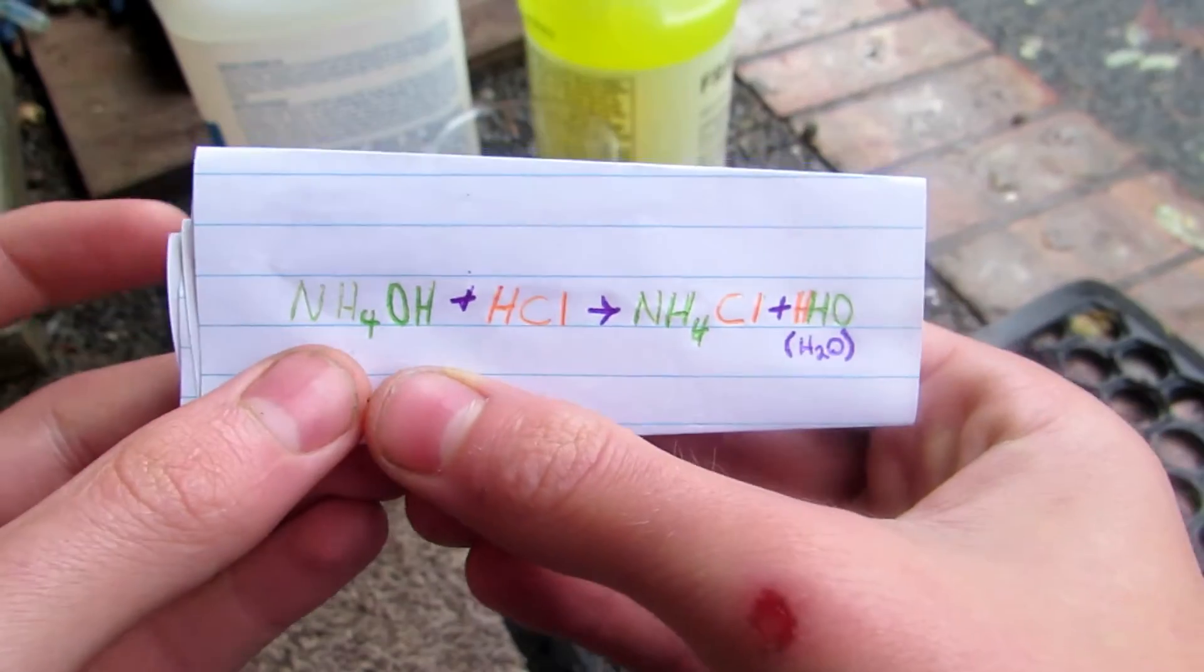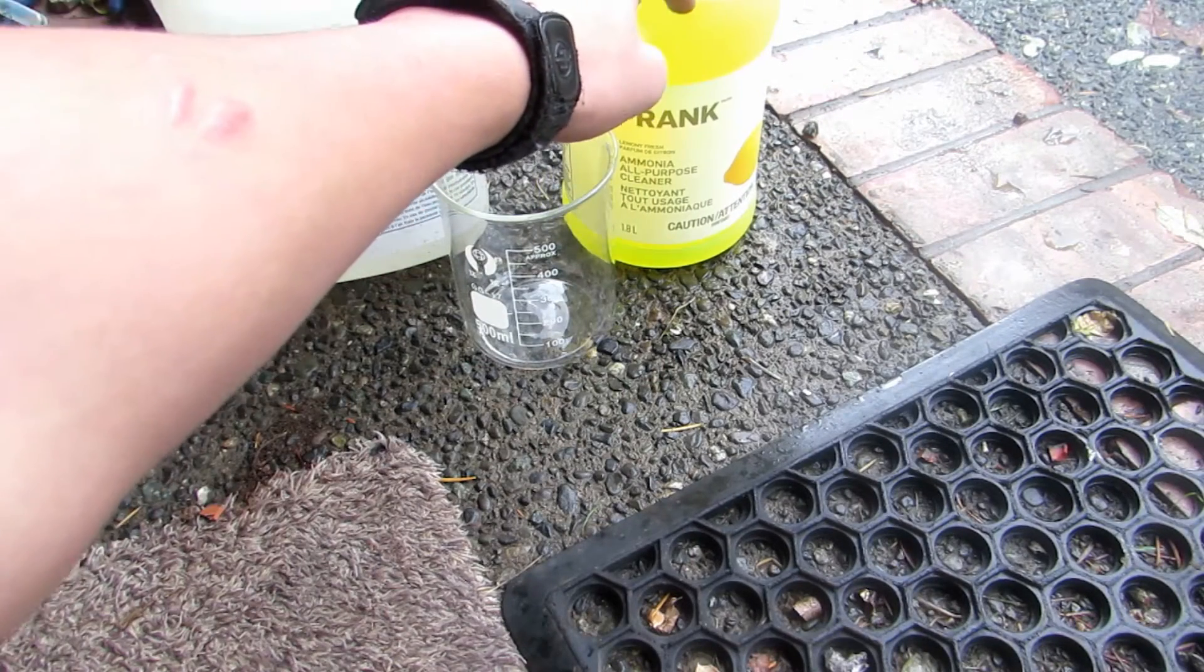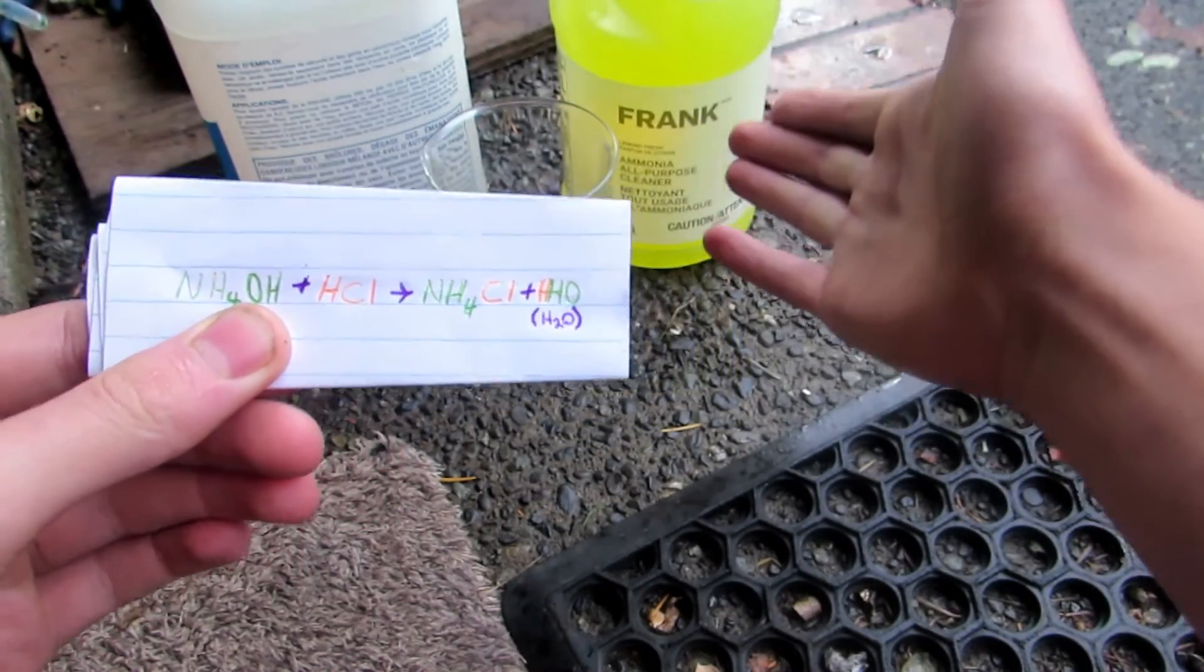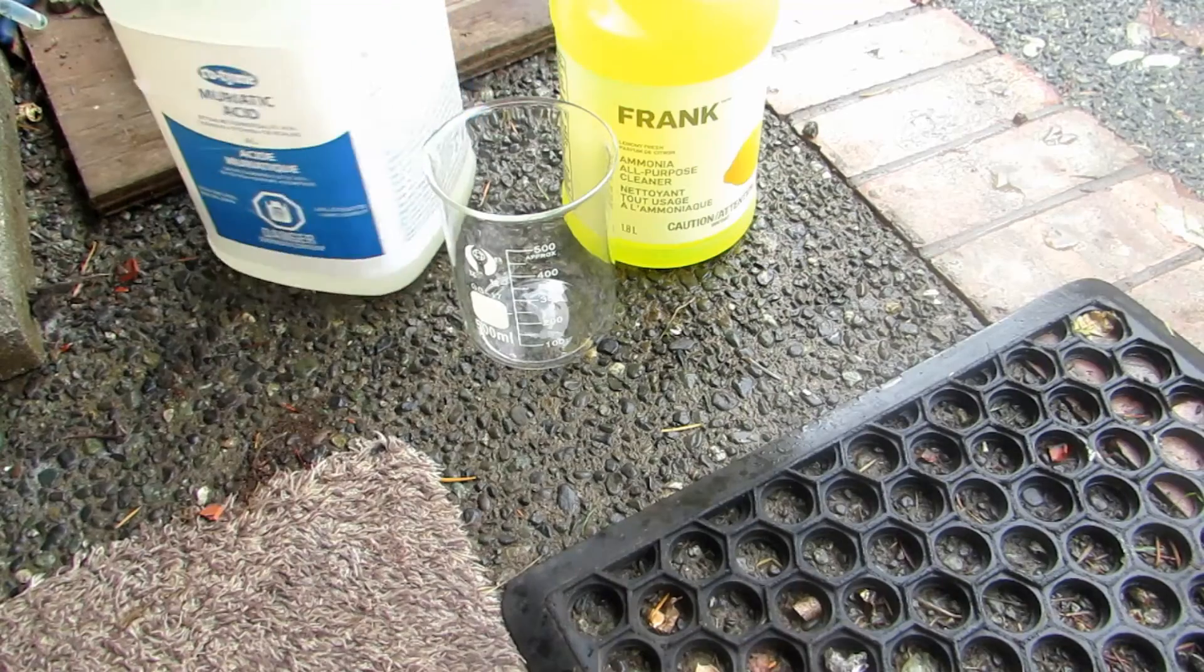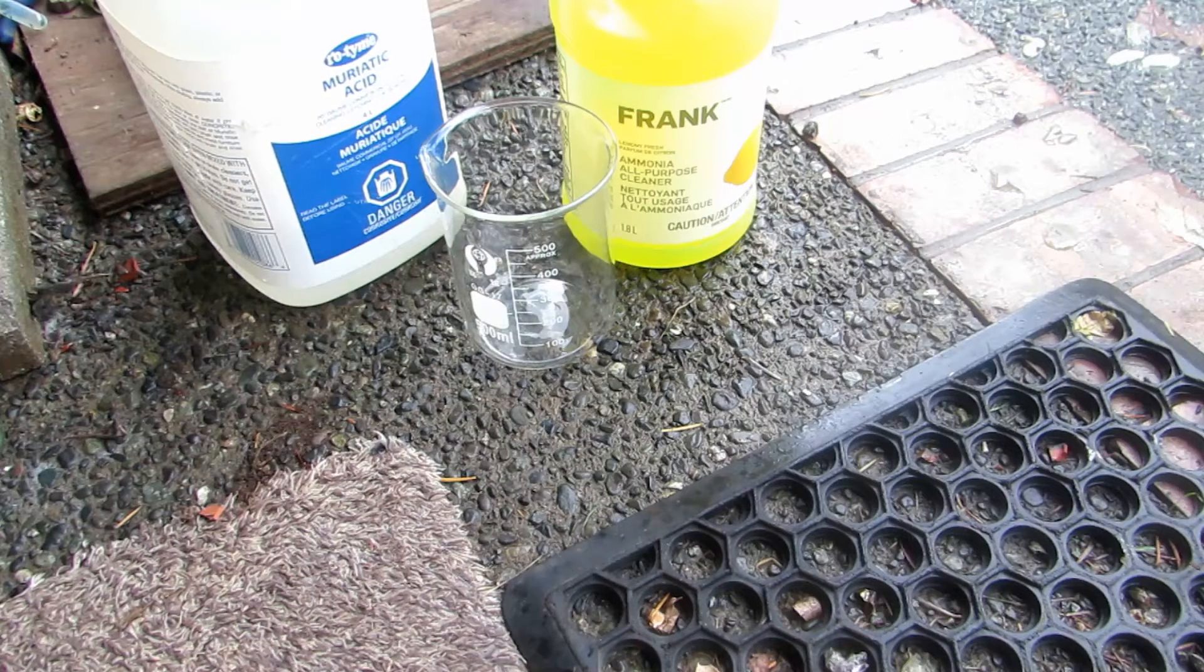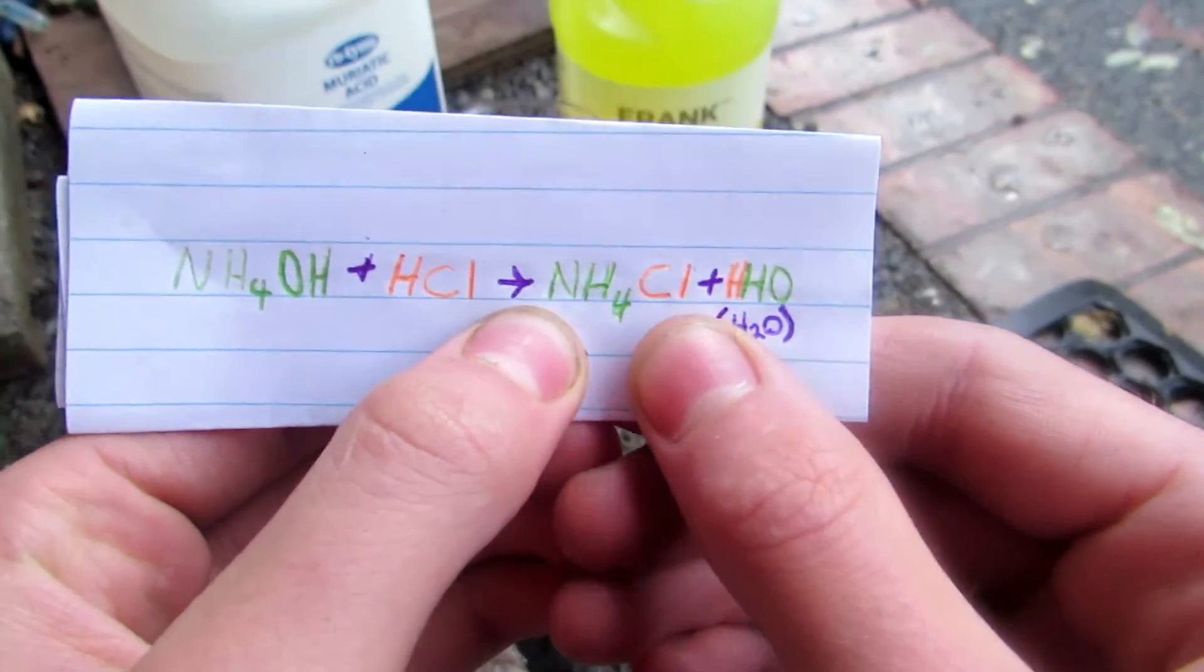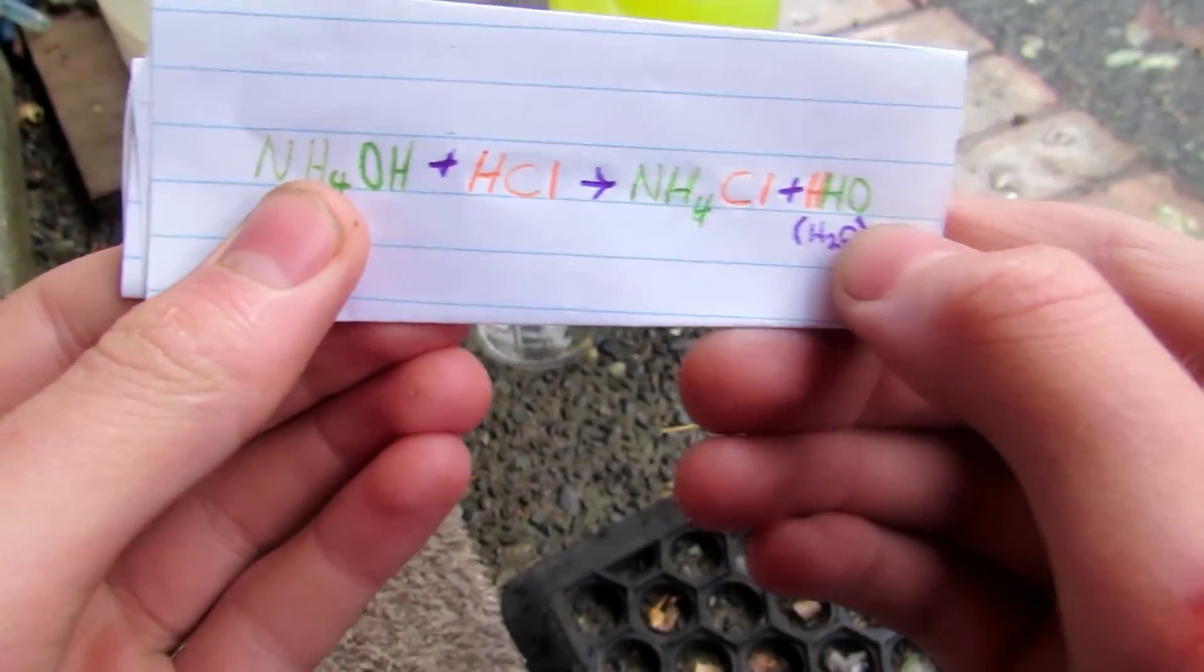The reaction that we're going to be following today is ammonium hydroxide, which can be sold as household ammonia. It's best to get the clear stuff, but I could only find this lemon scented stuff. That's fine because we're going to be doing a recrystallization and we'll get rid of all that yellow color. We're going to be reacting the ammonium hydroxide with hydrochloric acid. This is sold as muriatic acid, hydrochloric acid with a concentration of 31.45 percent, which is approximately 10 molar. This is then going to produce ammonium chloride and water. It's essentially just water, H2O.